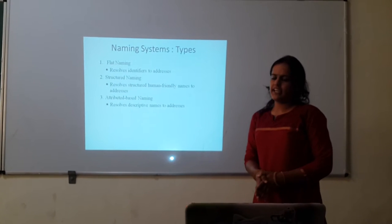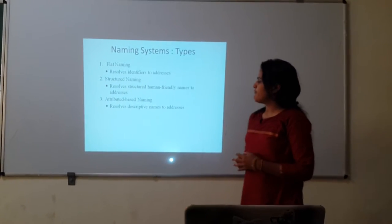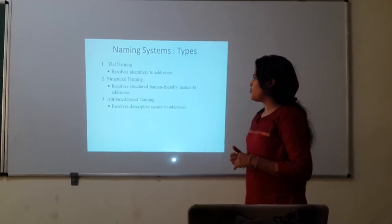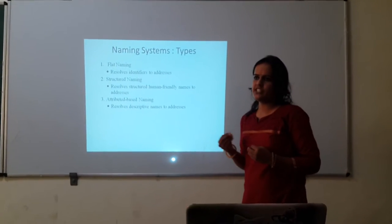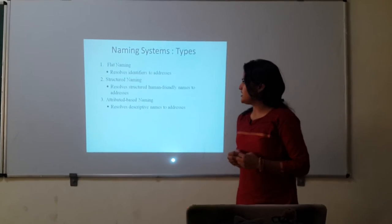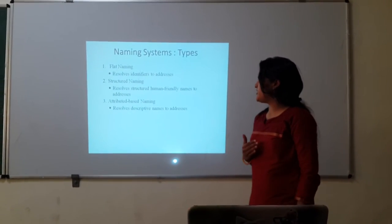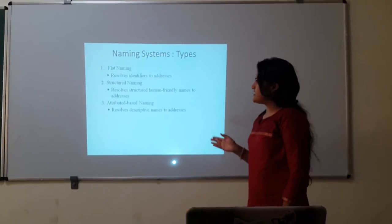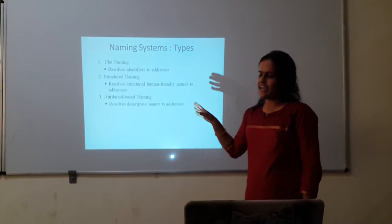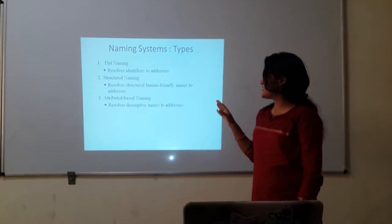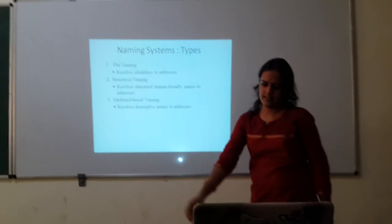Naming system. There are three types of naming system: flat naming, structured naming and attribute based naming. Flat naming is used for resolving identifiers to its addresses. Structured naming resolves structured human friendly names to its addresses. And attribute based naming is used for descriptive names to its addresses.